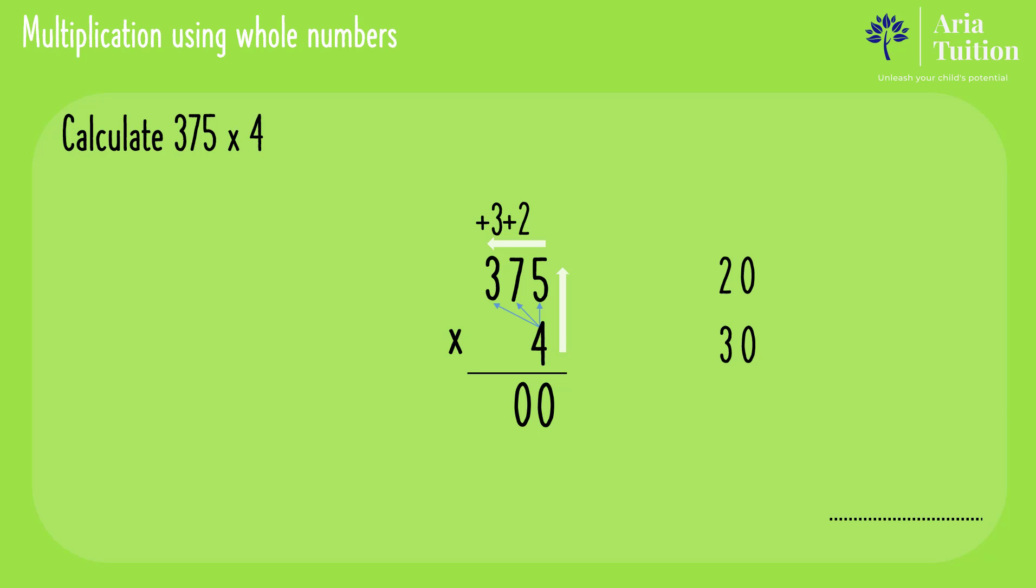And finally, 4 times 3 is 12. Adding the carried 3 gives us 15. And now we have our answer. 375 multiplied by 4 equals 1500.